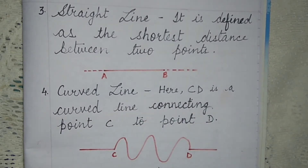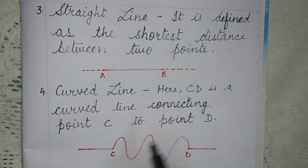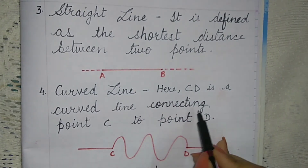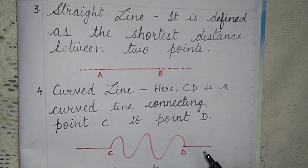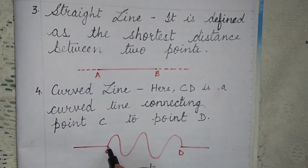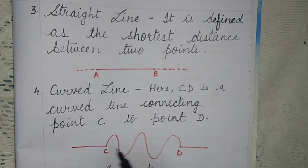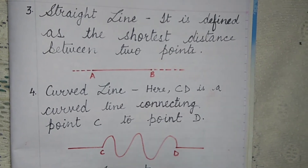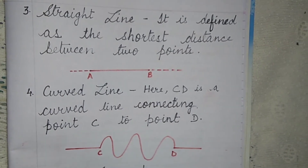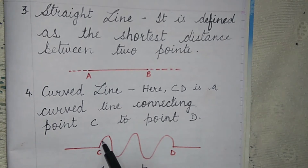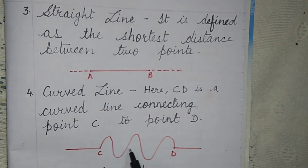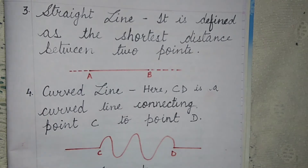Now come to curved line. C to D is a curved line connecting point C to point D. Here you see a curve — that curved line is called a curved line.